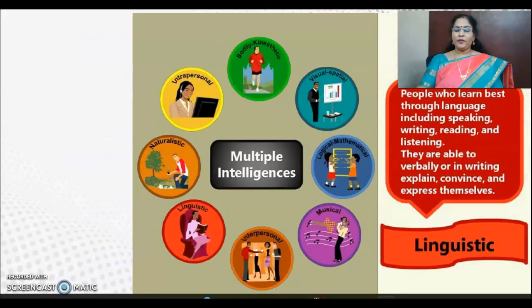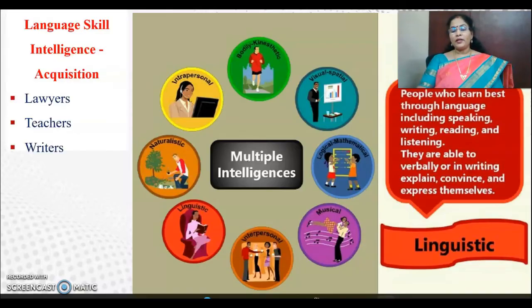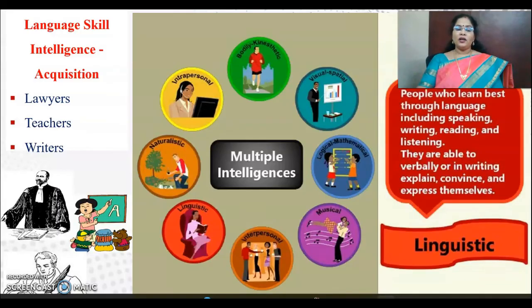Let's see one after the other. Linguistic intelligence people learn best through language, including speaking, writing, reading, and listening. They are able to verbally or in writing explain, convince, and express themselves. For example, these people will hold positions such as lawyer, teacher, or writer.